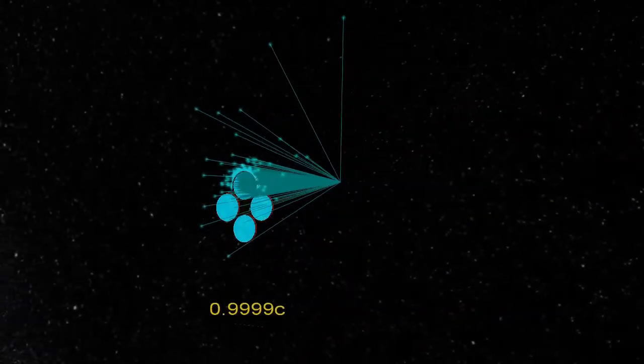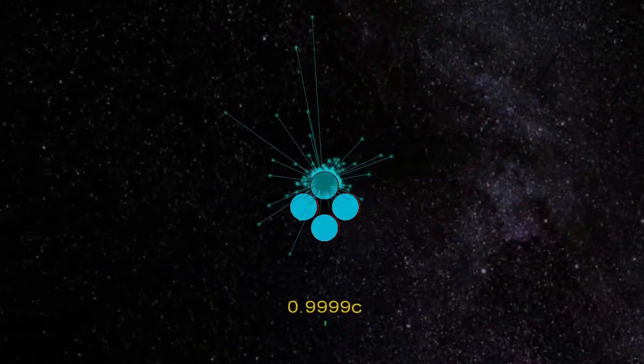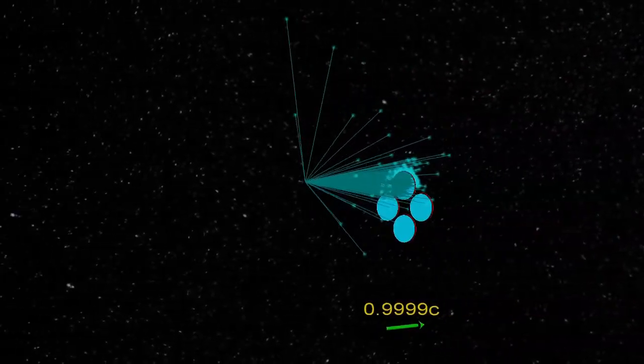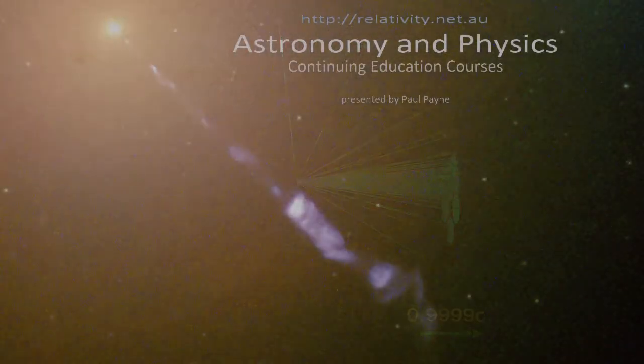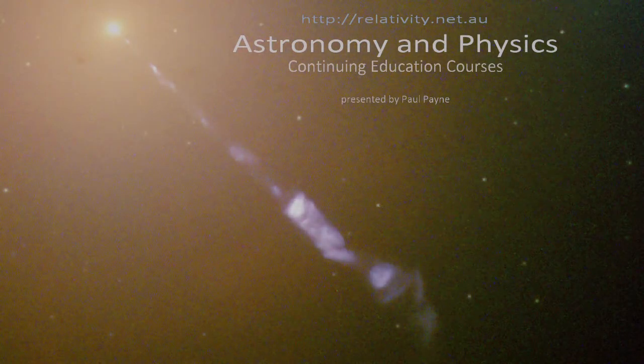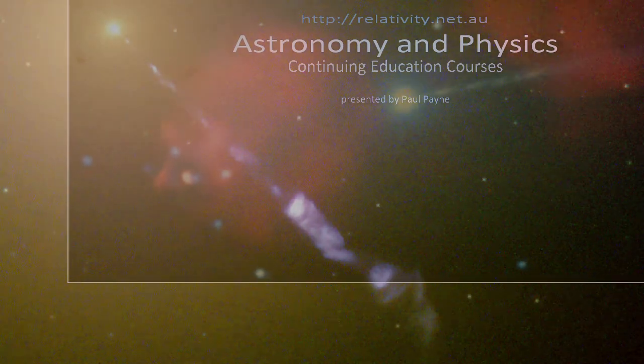This explains why, in the image of M87, we see a jet heading towards us, but not away. With the particles heading towards us, we are receiving most of the photons emitted by them as they rush away from around the black hole.